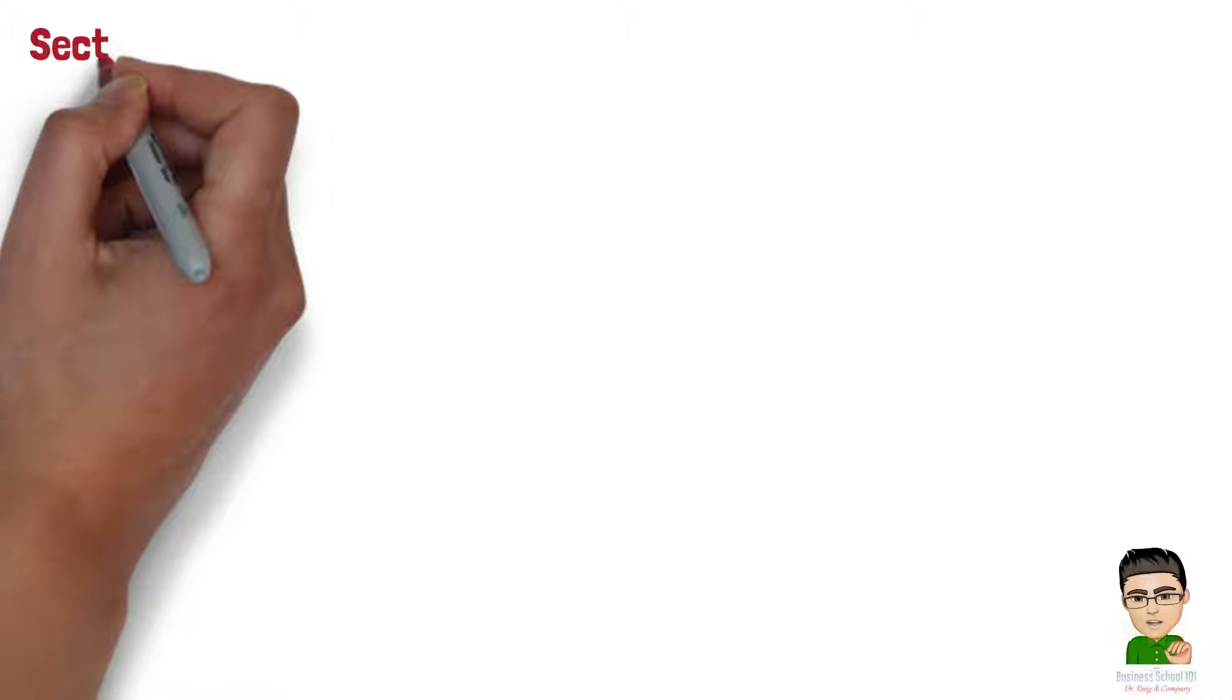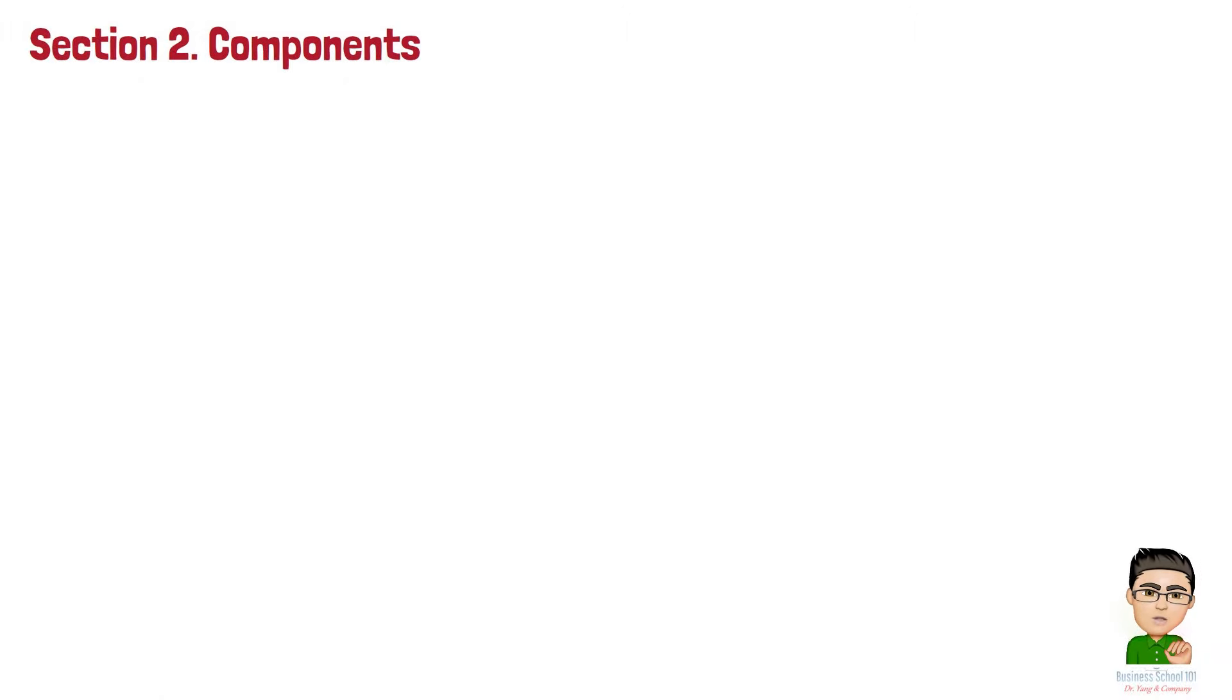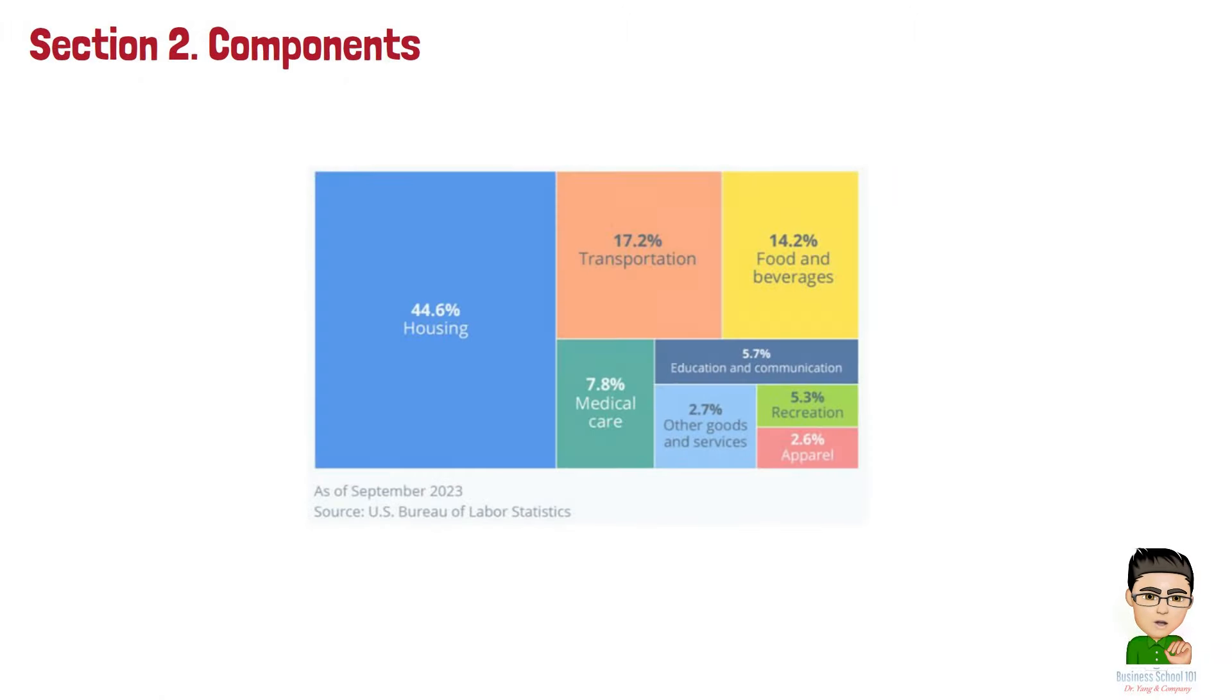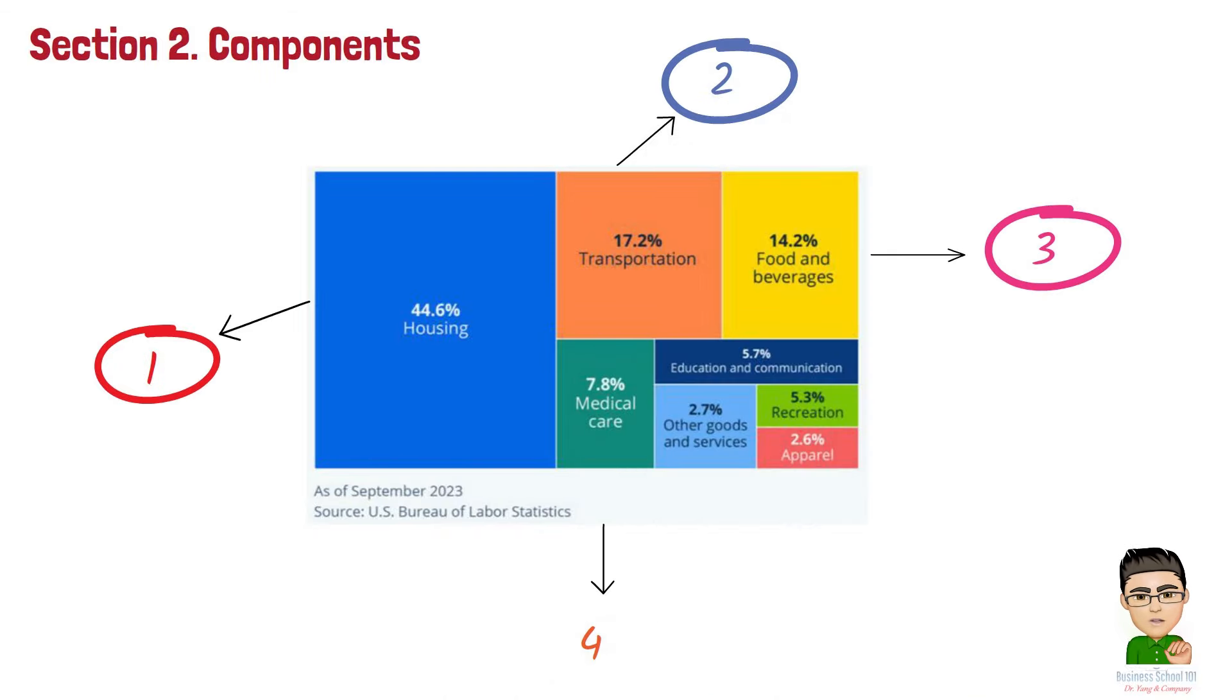Section 2. Components. As you can see in the picture, in the September 2023 CPI breakdown, housing, transportation, food and beverages, medical care, and education and communication emerge as the top five weighted categories, shaping the core components of the CPI index. So let's delve into each of them.